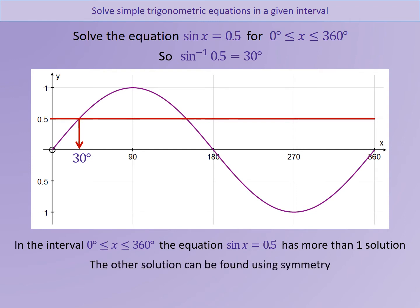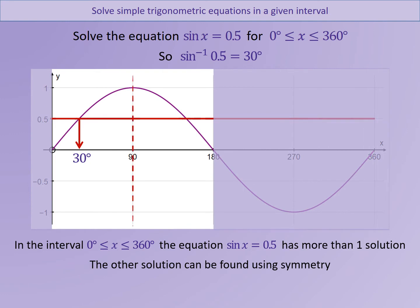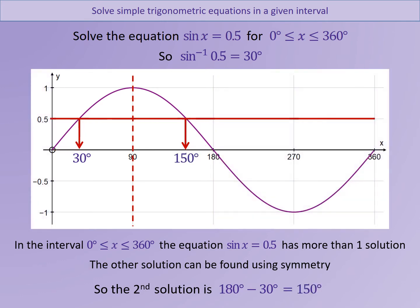We can find the value of that second solution using the symmetry of the sine curve. Taking this section of the curve allows us to see in more detail how we find the second value where sine equals 0.5. Using the symmetry of the sine curve, that value is 180 minus the 30 degrees we found previously, so our second solution is 150 degrees.